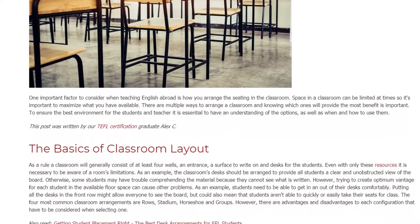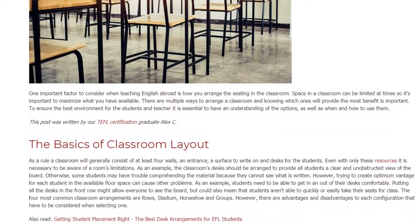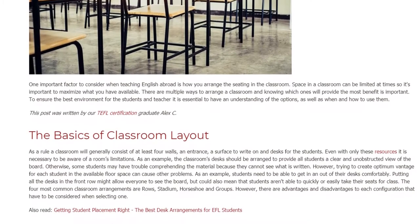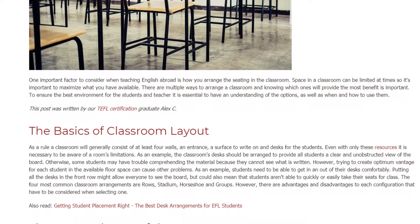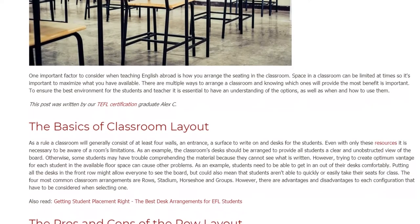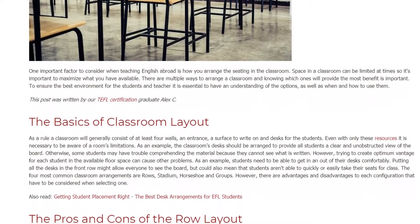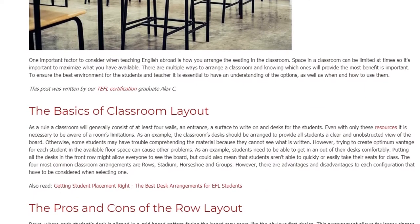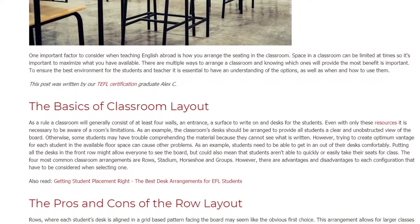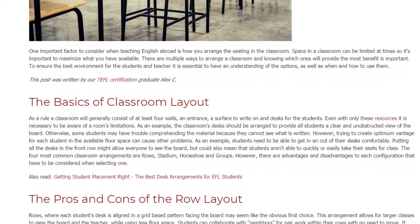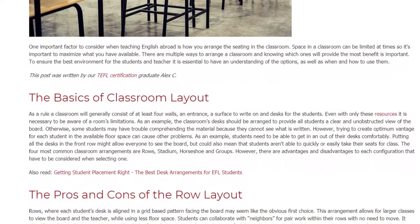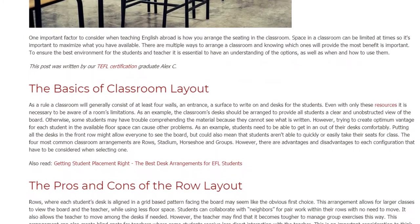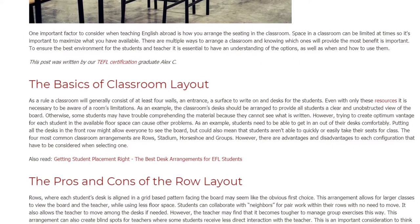Otherwise, some students may have trouble comprehending the material because they cannot see what is written. However, trying to create optimum advantage for each student in the available floor space can cause other problems. For example, students need to be able to get in and out of their desks comfortably. Putting all the desks in the front row might allow everyone to see the board, but could also mean that students aren't able to quickly or easily take their seats for class.